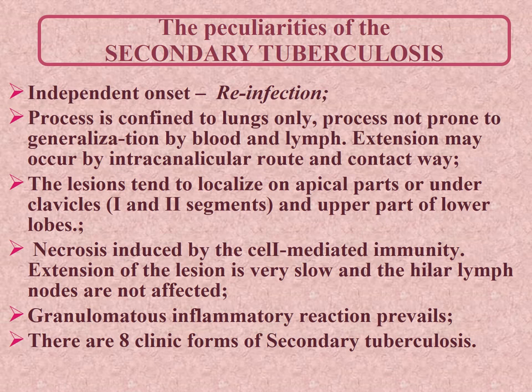Secondary tuberculosis is morphologically, pathogenically, and clinically different from the previous two forms. Characteristic features are: independent onset; process confined to the lung only; process not prone to generalization by blood and lymph; extension may occur by intercanalicular route and contact way; lesions tend to appear in characteristic sites — localized on the apical part or under the clavicles (first and second segments) and upper part of lower lobes, usually the right lung. Necrosis is induced by cell-mediated immunity, extension of lesion is very slow, and hilar lymph nodes are not affected. Granulomatous inflammatory reaction prevails.